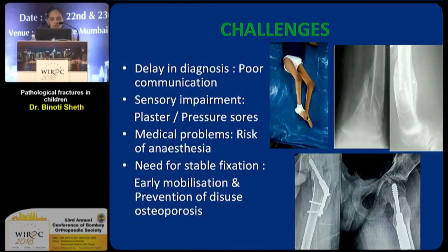There are challenges in these neuromuscular children because many of them have poor communication ability, so diagnosis is many times delayed. Some of them have sensory impairment where, if you treat with conservative management, plaster sores and pressure sores are very common. They may be difficult to take under anesthesia because of additional medical problems. At the same time, they all need stable fixation because we have to mobilize them early in order to prevent disuse osteoporosis and prevent them from becoming disabled and unable to walk.